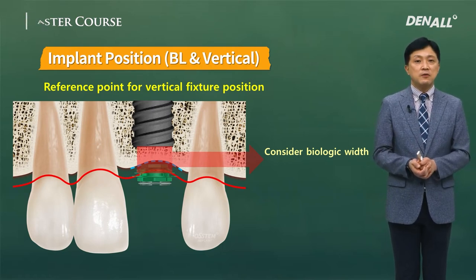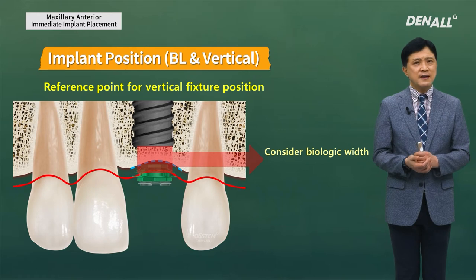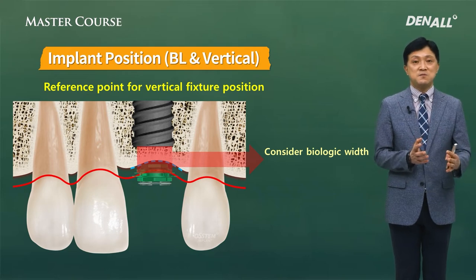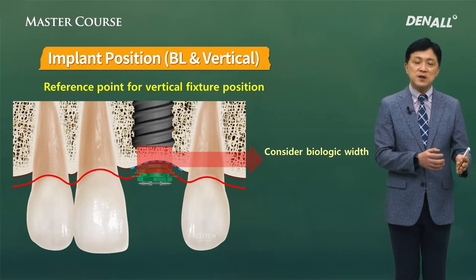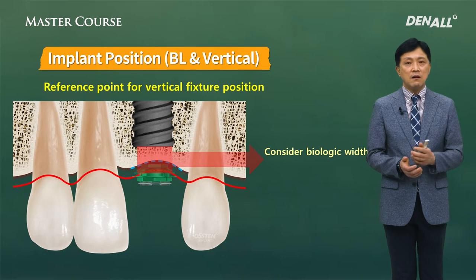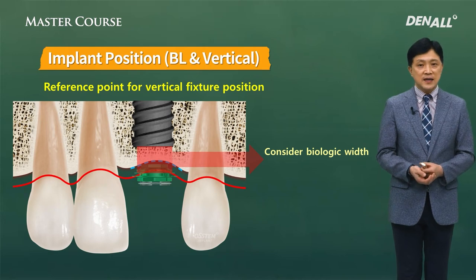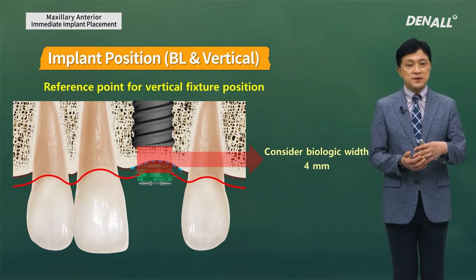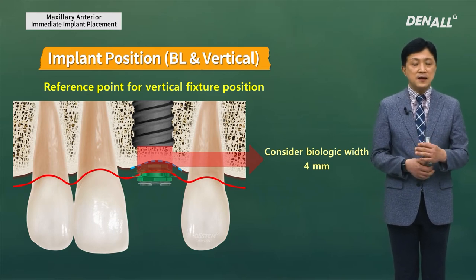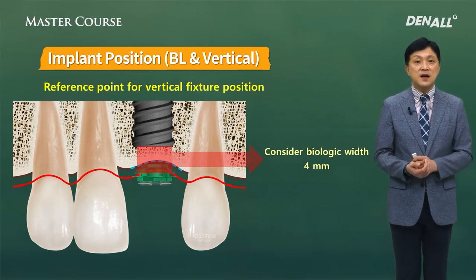What I recommend is that it is much better to place an implant deeply than shallowly. Of course, if it is too deep, there will be problems. But placing an implant shallower rather than deeper is not favorable aesthetically or in terms of long-term prognosis. The implant biologic width is 4 mm, so 4 mm of soft tissue needs to be present on top of the implant platform. That needs to be considered.